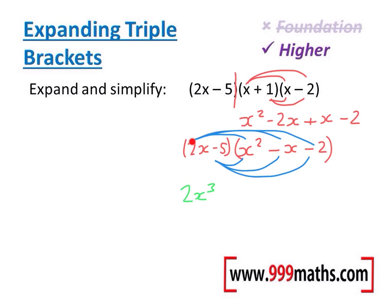Right, the next part of this is 2x times by minus x. Well that will be minus 2x squared. The third part will be 2x times by minus 2. So that will be minus 4x.